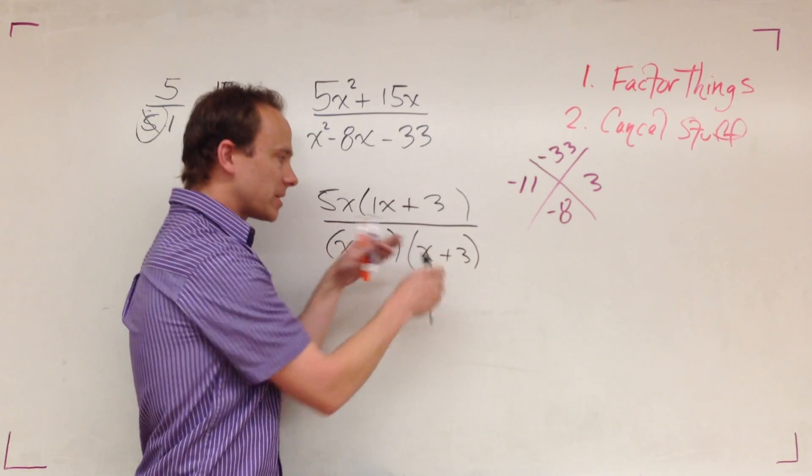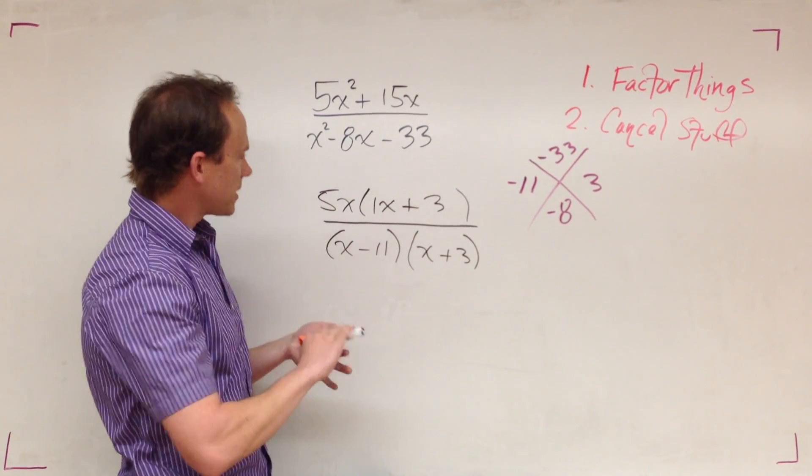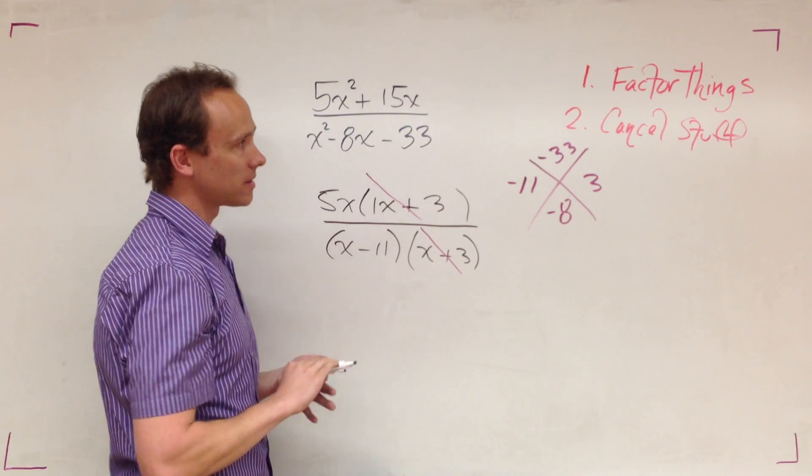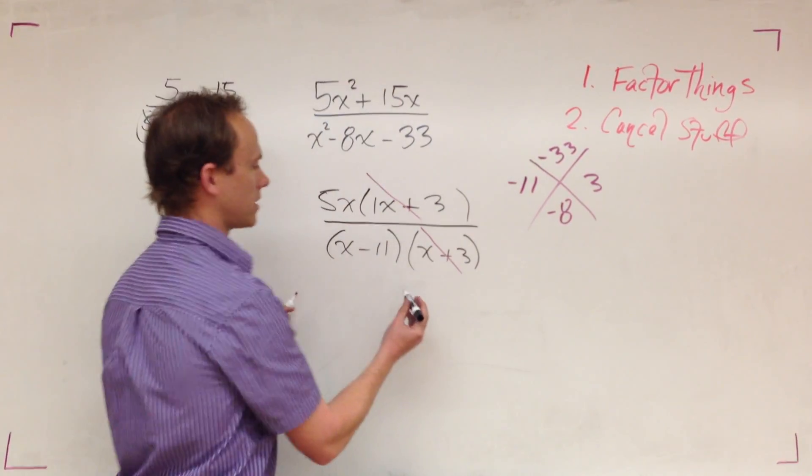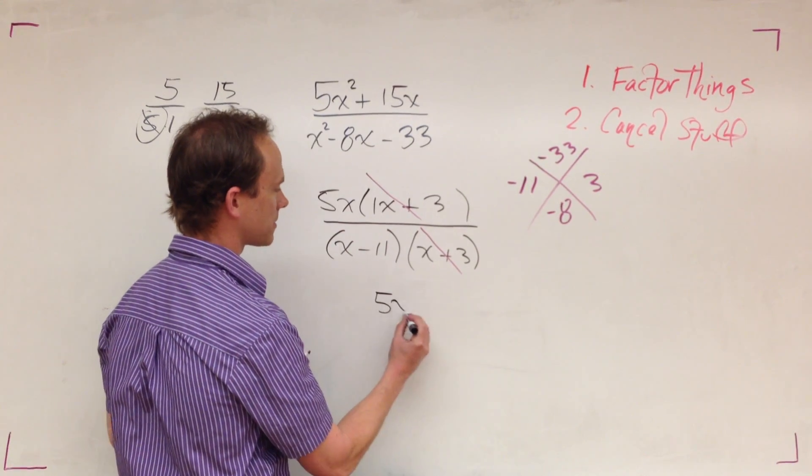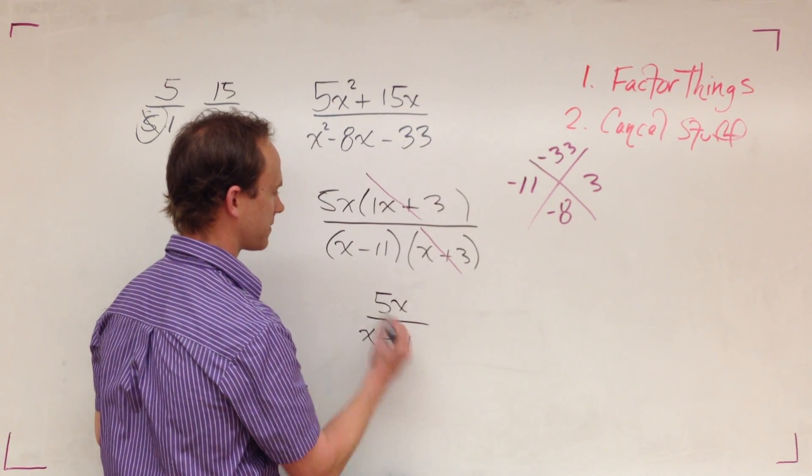Factor things, cancel stuff. You end with 5x over x minus 11.